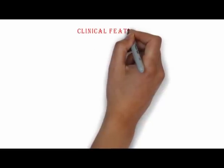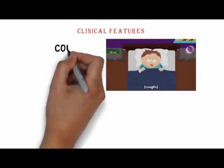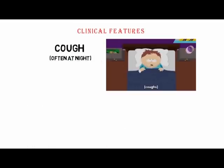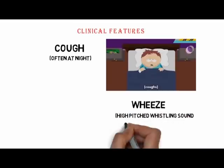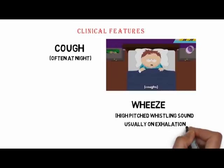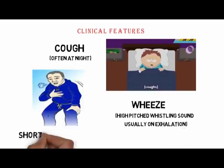How does a patient with asthma present? First, a cough often worse at night. Second, wheeze — a high-pitched whistling sound usually upon exhalation. The patient can also present with shortness of breath or difficulty breathing.